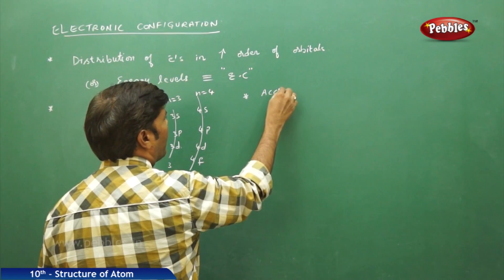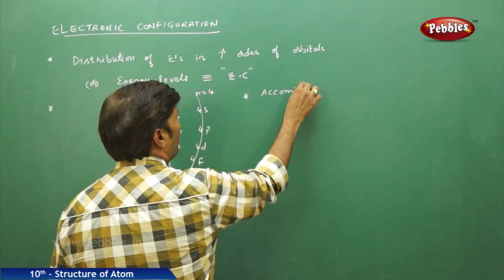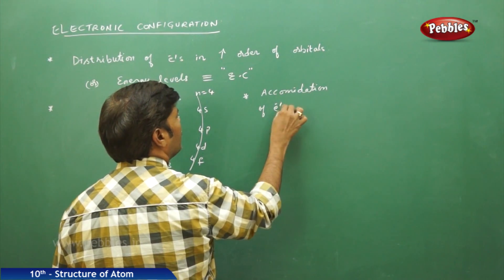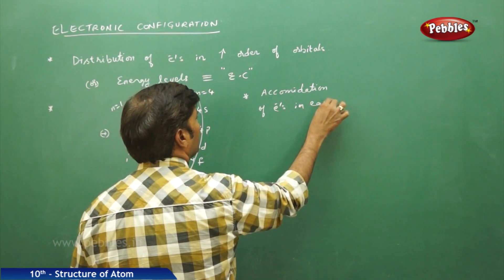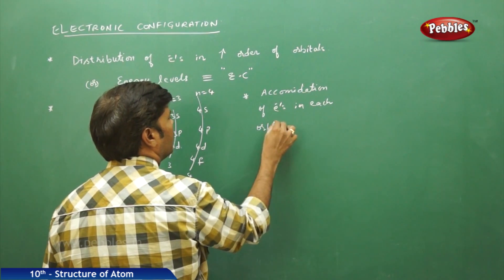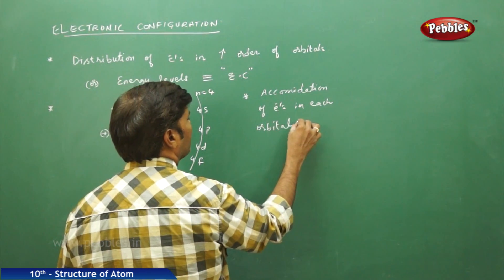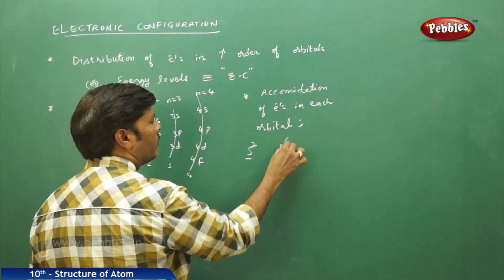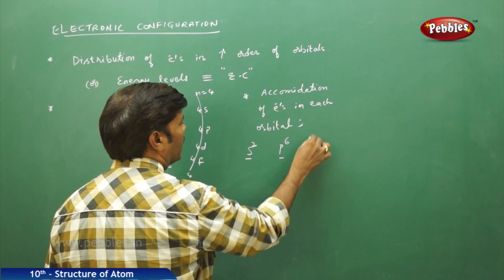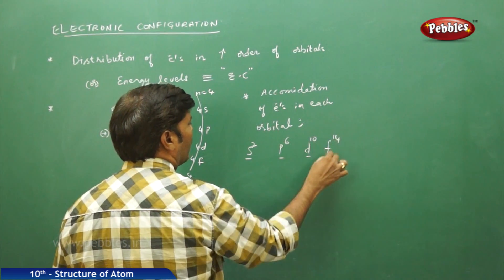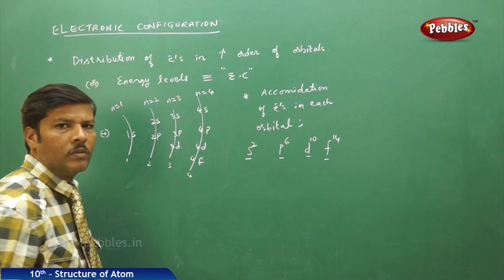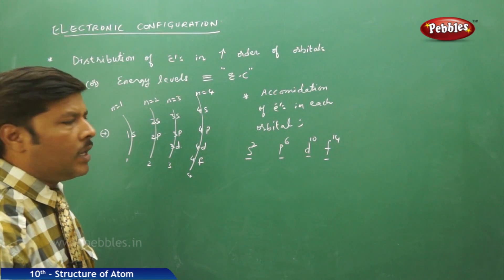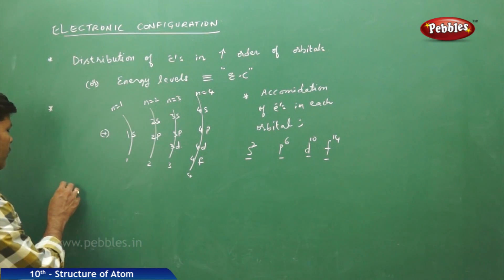What you need to notice is the accommodation of electrons in each orbital: the s orbital can accommodate 2 electrons, the p orbital can accommodate 6 electrons, the d orbital can accommodate 10 electrons, and the f orbital can accommodate 14 electrons. This is an important point to keep in mind.